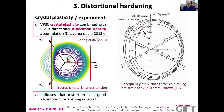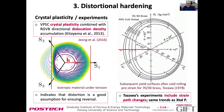The distortion is highest for the lowest offset strain. Looking at the unloading stress, it is larger than the flow stress after 3% of reloading, so the stress hasn't recovered yet. Tozawa's experiments involving strain path changes lead to the same trends as the crystal plasticity simulations we saw.